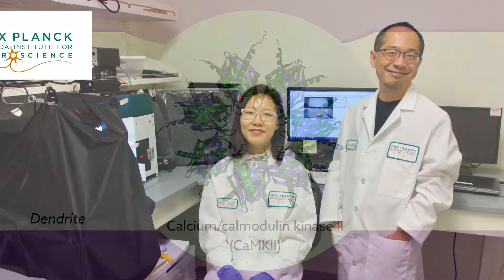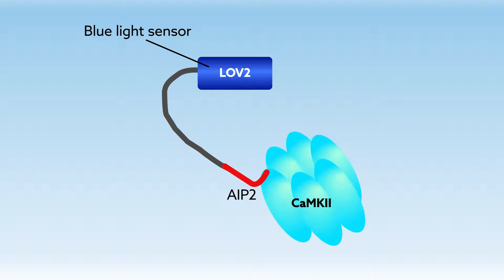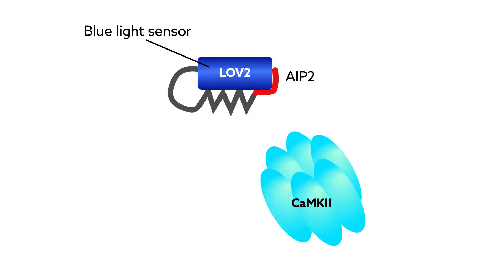To find out, researchers from the Max Planck Florida Institute for Neuroscience, in collaboration with the National Institute of Physiological Sciences in Japan, created a light-activated version of AIP2, a CAMK2 inhibitor, by attaching a blue light sensor to it. Turning on the light activated the inhibitor and blocked CAMK2 activity almost instantaneously, while turning it off allowed CAMK2 activity to resume in less than one minute.